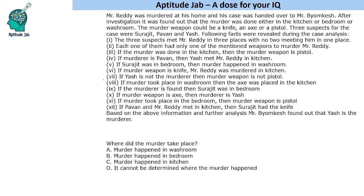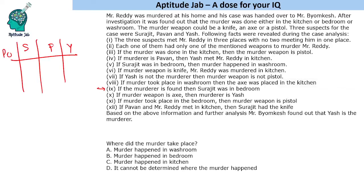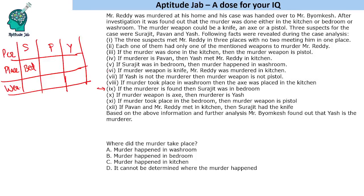Looking at the statements, statement number nine says: if the murderer is found, then Surajit was in the bedroom. Since Yash is found as the murderer, Surajit was in the bedroom. Let us write the three people — Surajit, Pavan, and Yash — along with the places where they were and the weapons they had. Each of them had one weapon, but only one of them killed the person.